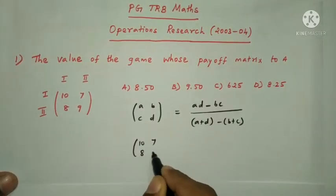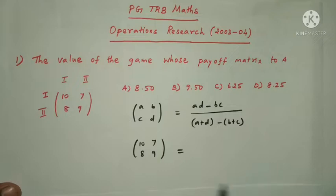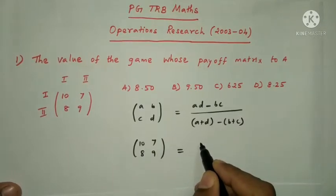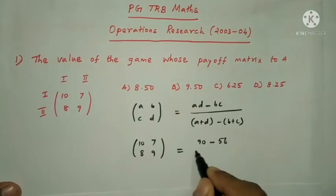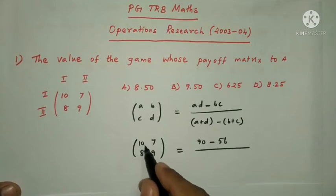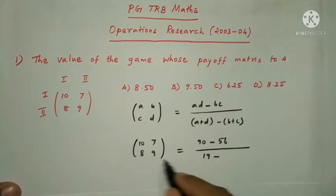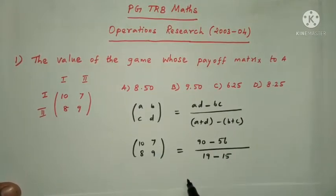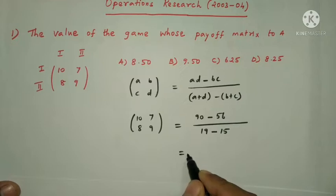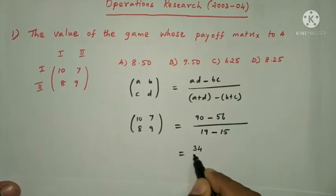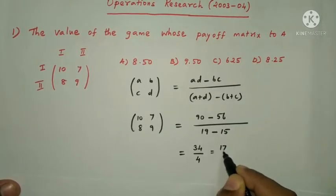For the matrix with elements 10, 7, 8, 9: the value of the game is (10×9 minus 8×7) divided by (10+9 minus 8+7). That is 90 minus 56 = 34, divided by 19 minus 15 = 4. So 34 by 4 equals 17 by 2.